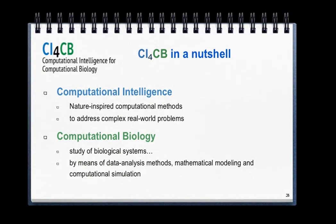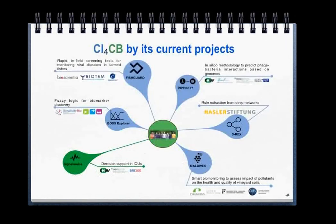What we do is computational intelligence, which is related to nature-inspired computational methods, applied to complex real-world problems, and in particular to computational biology — that gives the name to my group, Computational Intelligence for Computational Biology. From our point of view, this is the general study of biological systems by means of data analysis methods, mathematical modeling, and computational simulation. A good way to understand what we do is to look at some of our current projects.